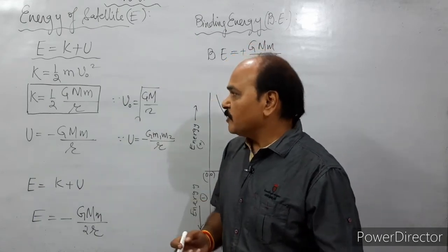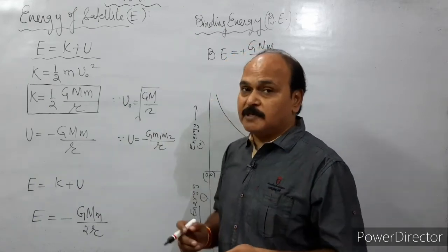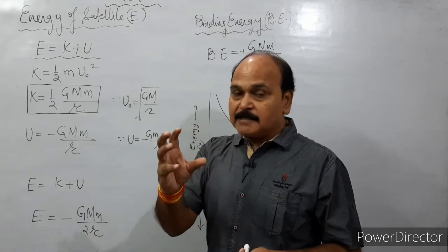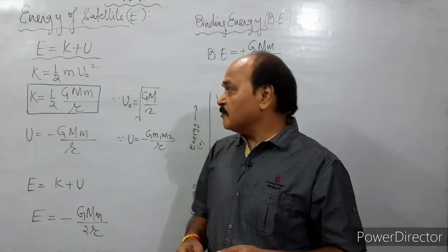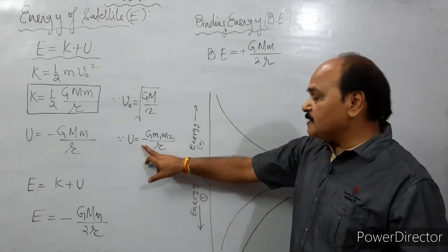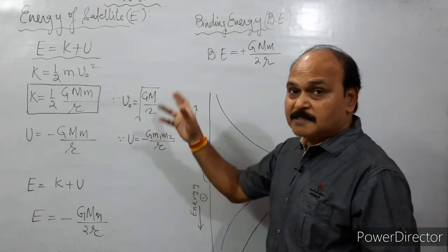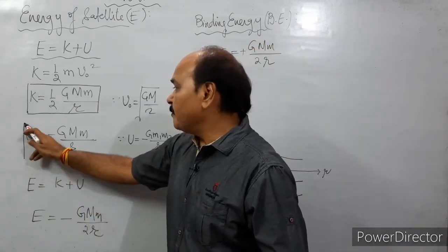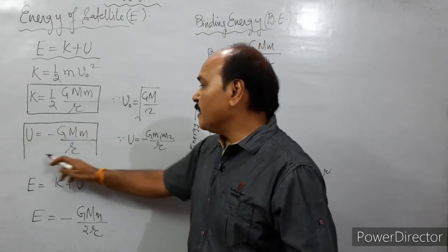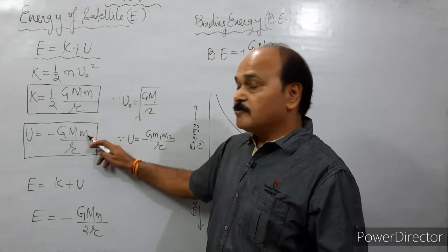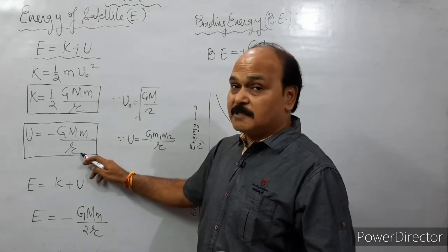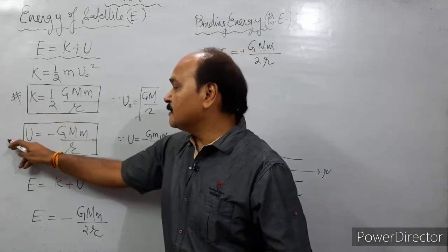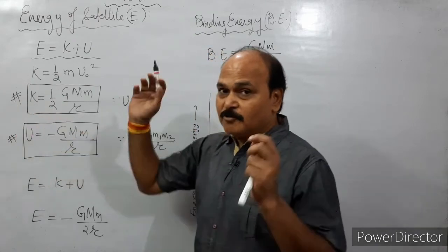Potential energy is the potential energy of a two-mass configuration — the satellite and the planet — which is -Gm₁m₂/r, where r is the separation between the two masses. So potential energy of the satellite is -GMm/r. Kinetic energy is +GMm/2r and potential energy is -GMm/r. Their sum total gives the total energy.